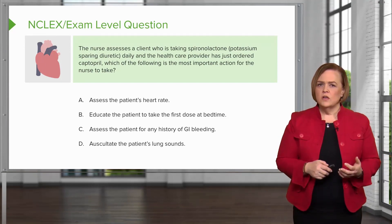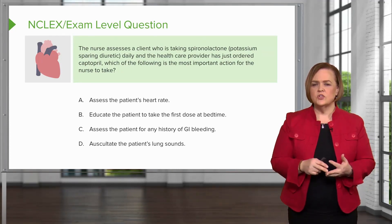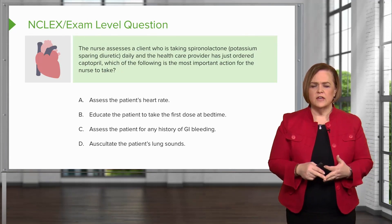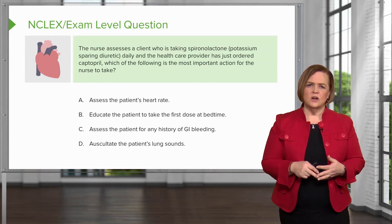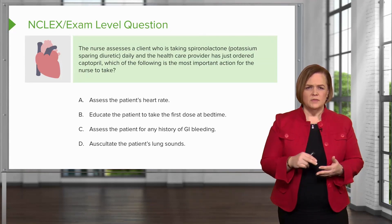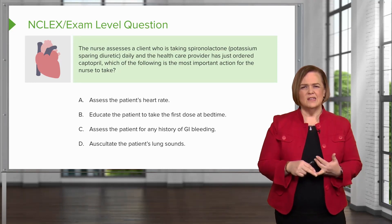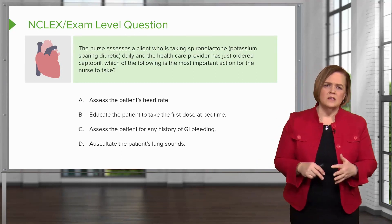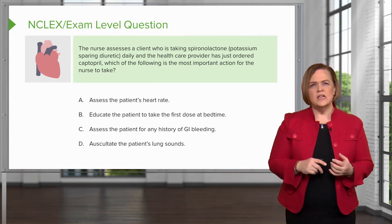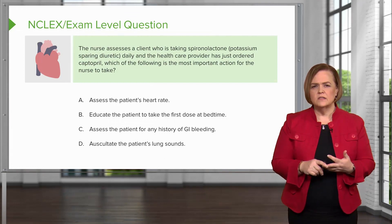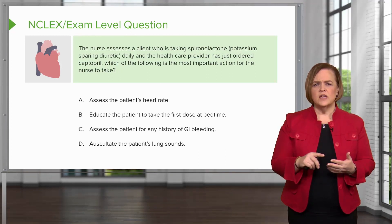These are all pretty good answers, but let's take a look. What do we know is a risk for a patient on a diuretic who is starting an ACE inhibitor for the first time? Is heart rate our most important thing? ACE inhibitors don't really directly decrease your heart rate, so I'm going to cross that one out. What about assess the patient for any history of GI bleeding? Is there any connection to GI bleeding with ACE inhibitors or diuretics? No. So I'm going to cross that one off. So far I've crossed off the first and the third answer.